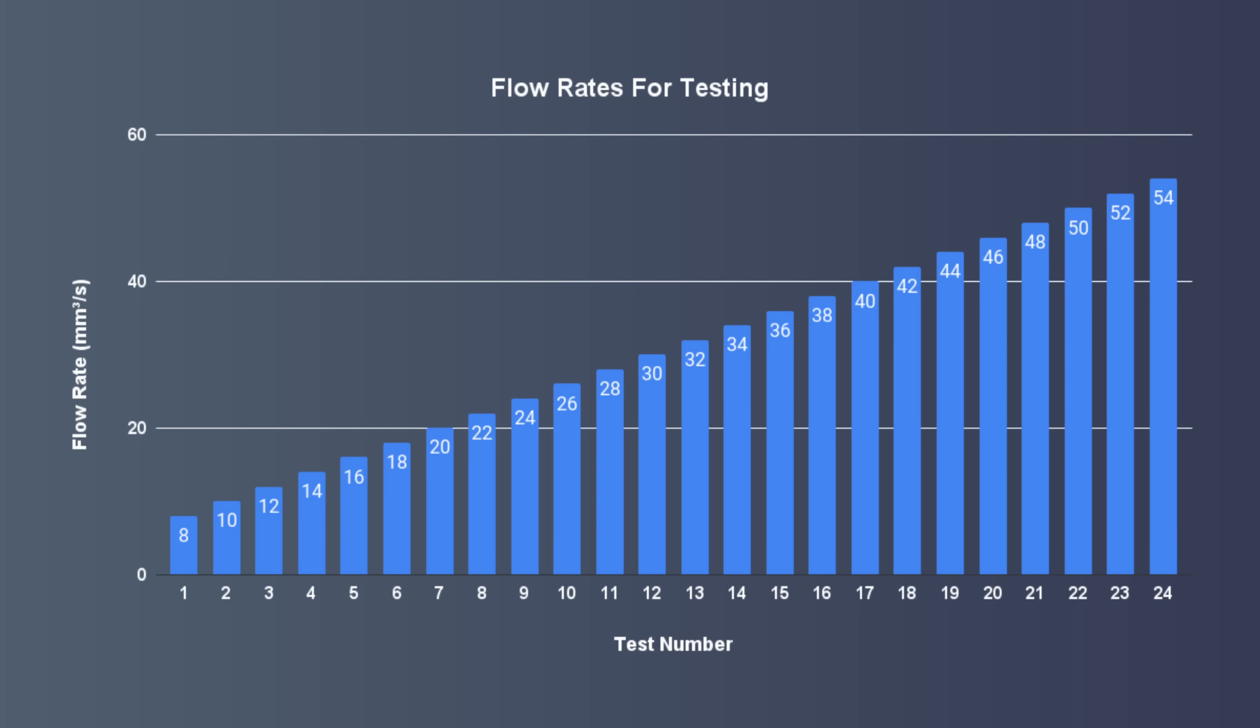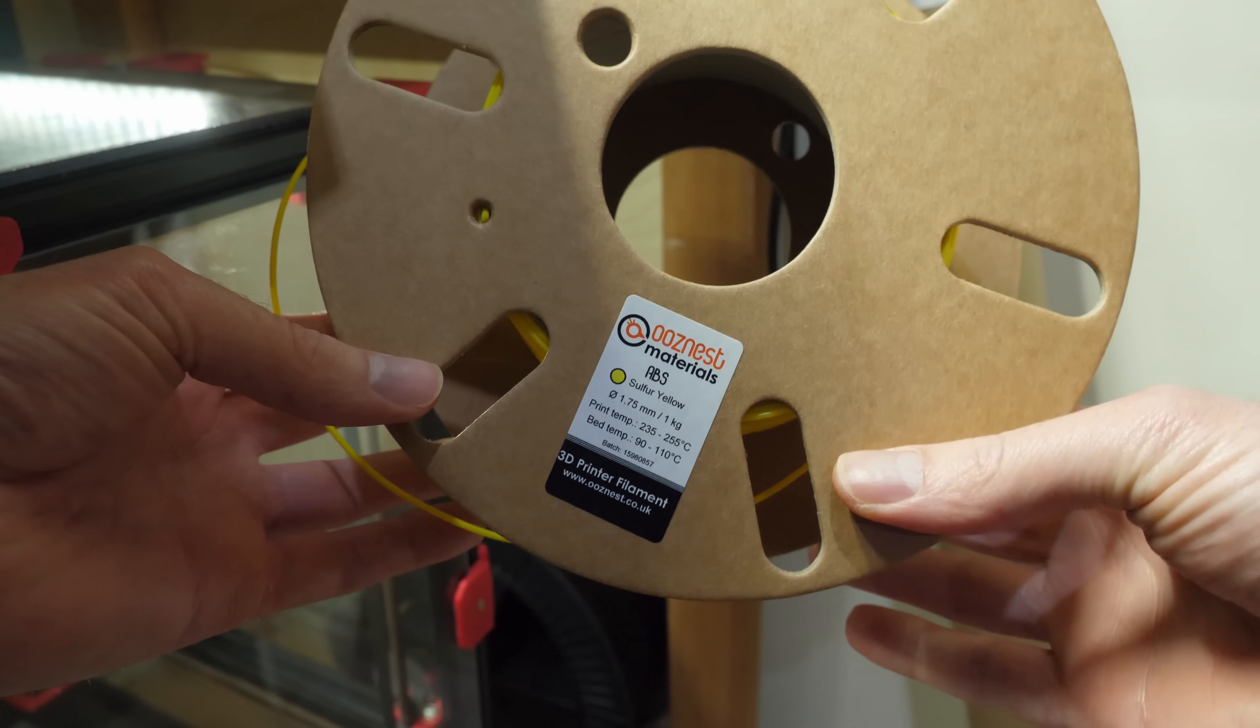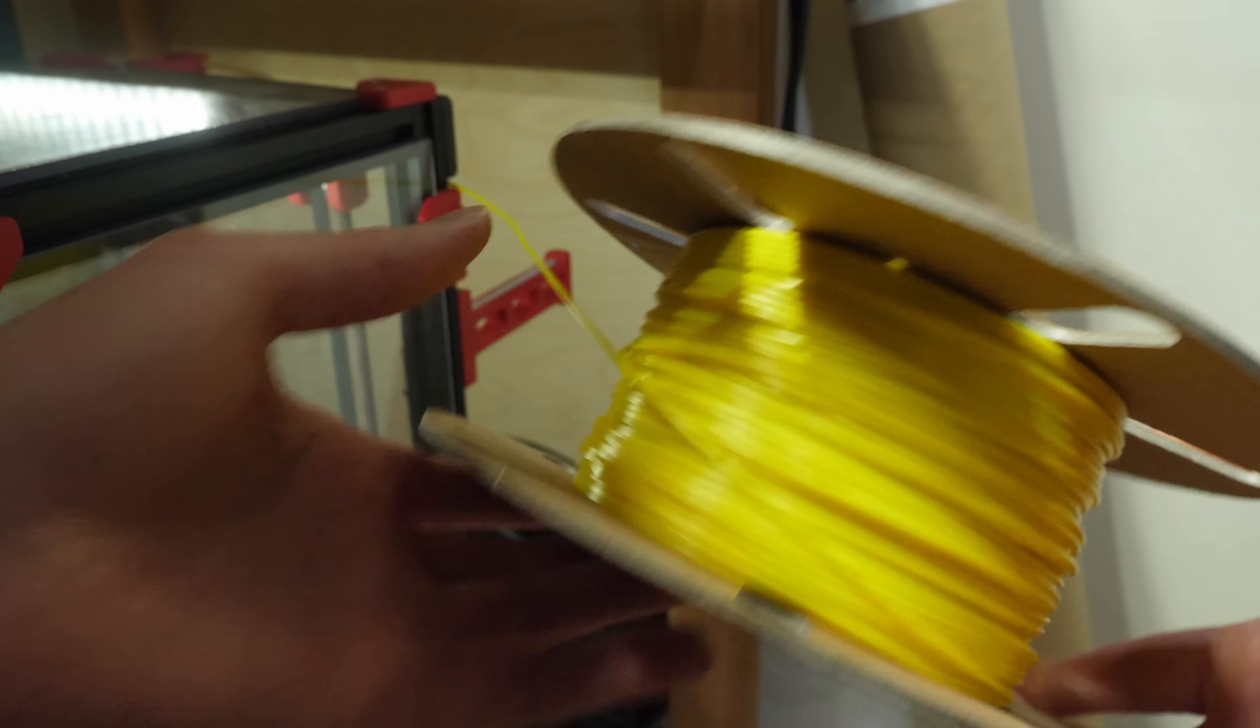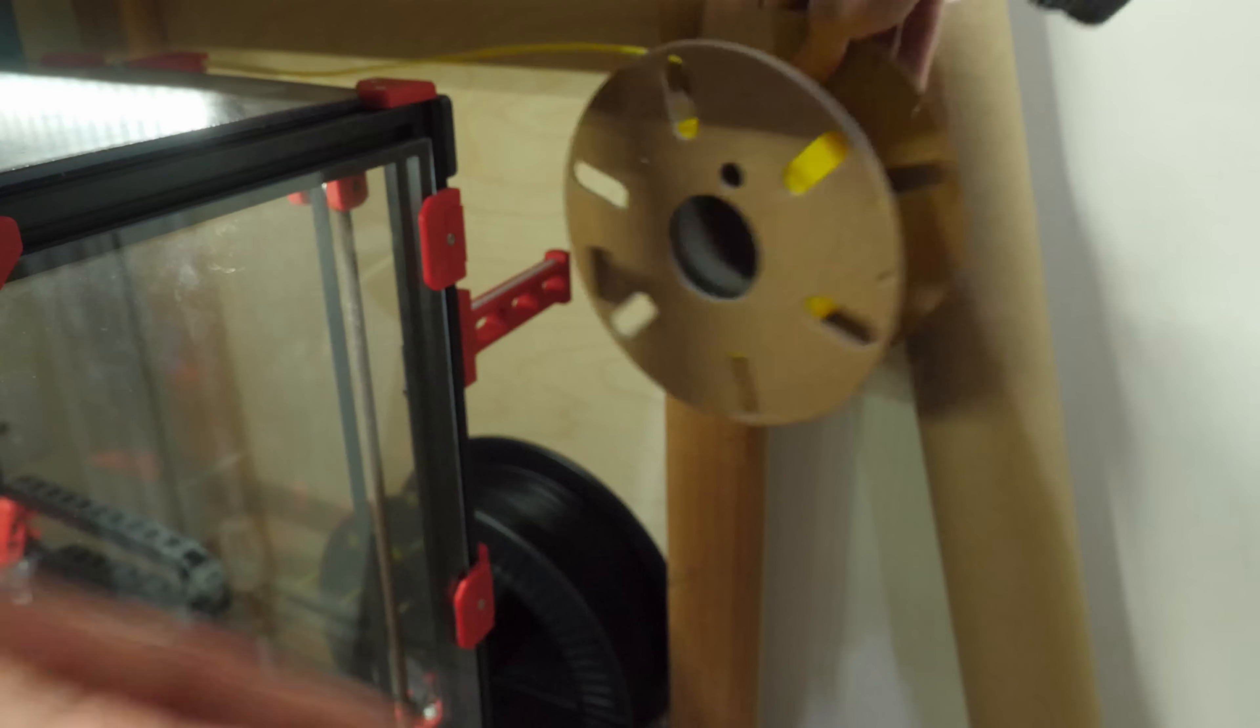I've tested 24 flow rates from 8 to 54mm cubed per second in steps of 2mm cubed per second, extruding 200mm for each blob. I've used Oozenest ABS Sulfur Yellow at 245 degrees C for all of my tests, all from the same roll of filament.